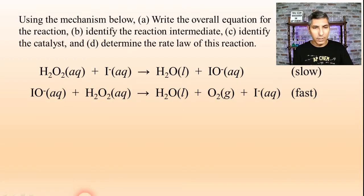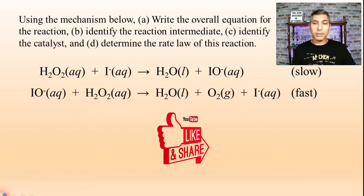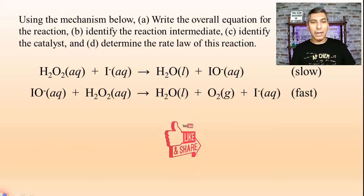Kind of like we saw in the last video, and it says using the mechanism below: part A, write the overall equation for the reaction; part B, identify the reaction intermediate; part C, identify the catalyst; and part D, determine the rate law of this reaction.